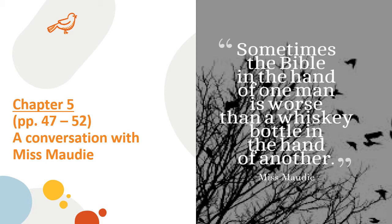'Do you think they're true, all those things they say about Mr. Arthur?' Miss Maudie replied: 'No, child, that is a sad house. I remember Arthur Radley when he was a boy — he always spoke nicely to me, no matter what folks said he did.' 'You reckon he's crazy?' 'If he's not, he should be by now. The things that happen to people we never really know. What happens in houses behind closed doors? What secrets?' Miss Maudie concluded: 'Atticus Finch is the same in his house as he is on the public streets.' Then she offered Scout some fresh pound cake to take home.